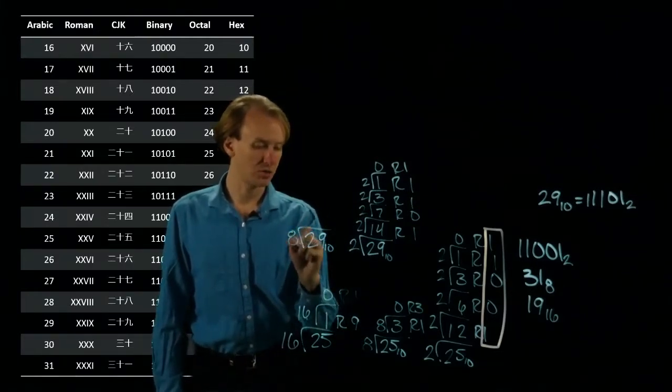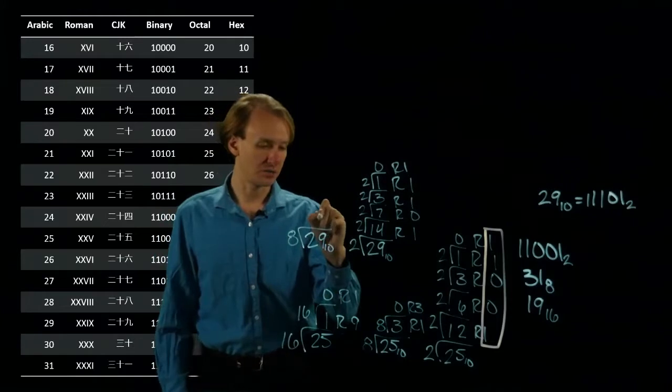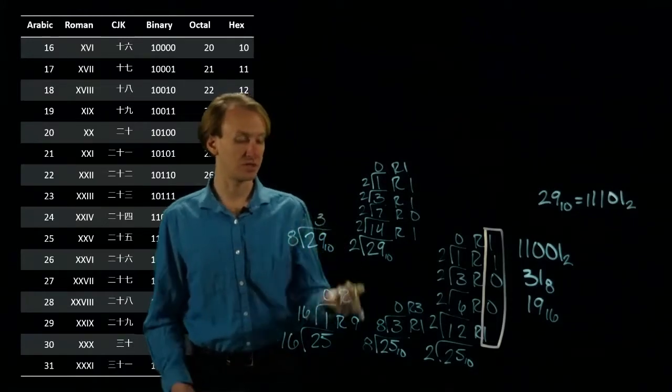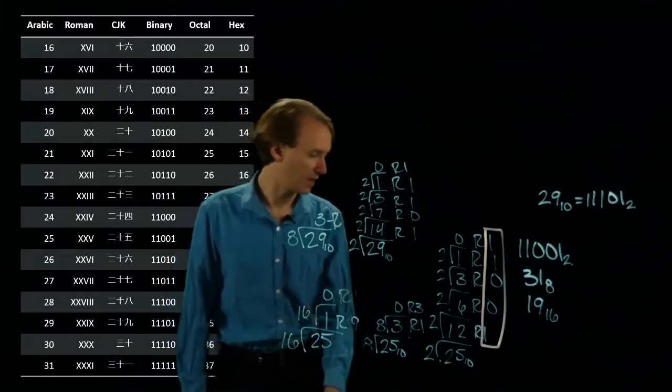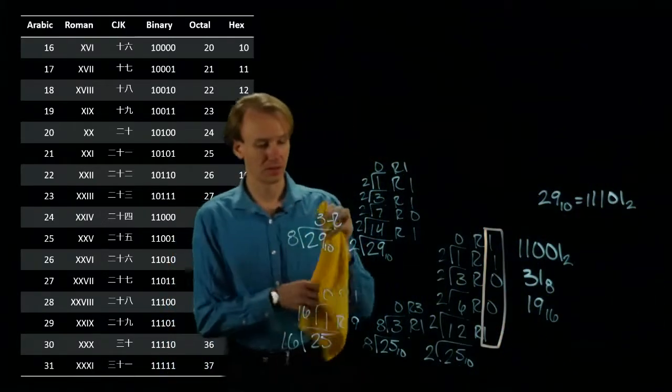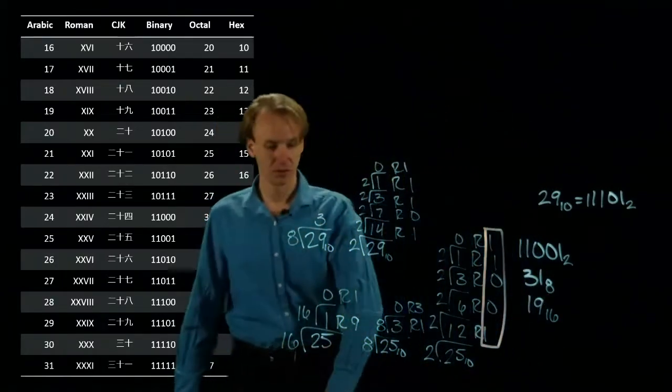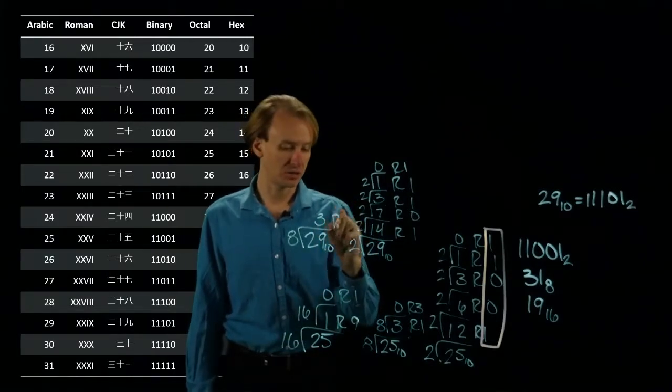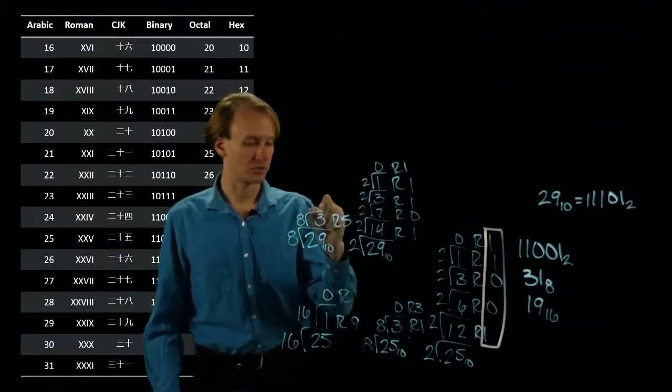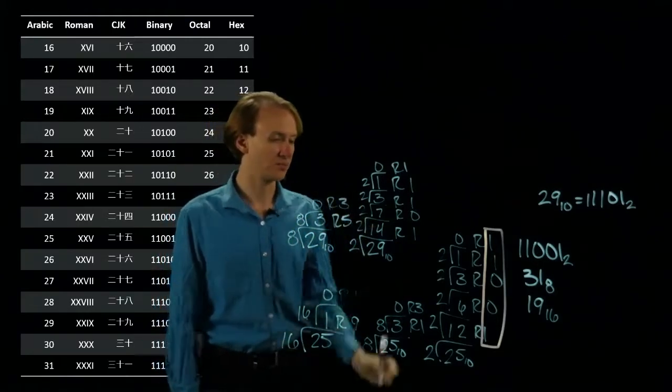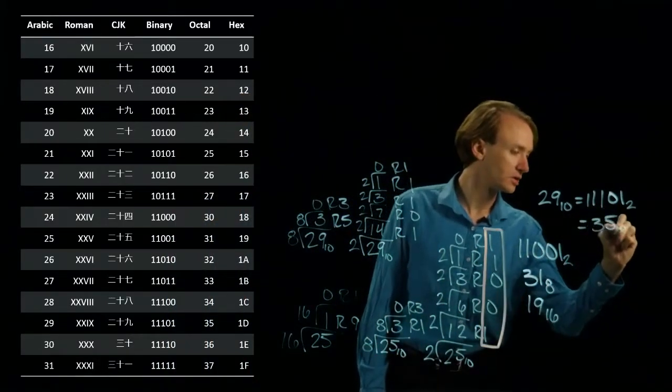In octal, I'll do the same thing. 8 goes into 29 three times. So 3 times 8 is 24, leaving me with a remainder of 5. And then 8 goes into 3, 0 times, remainder of 3. So that gives me 35 in octal.